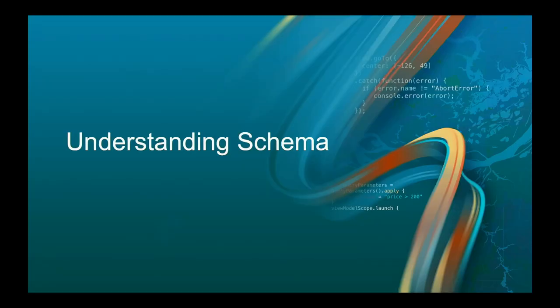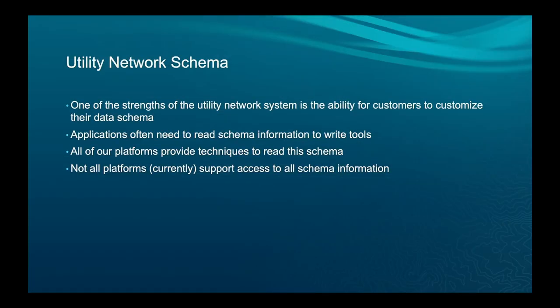Now I'll walk through different areas, starting with schema — the most boring one, but important. One of the great strengths of the utility network is we have recommended data models, but you can change that model or create your own entirely from scratch. Applications need to read schema information to write their tools. For example, if you want to identify transformers, you look for a category called 'transformer' on the asset groups and asset types in your system.